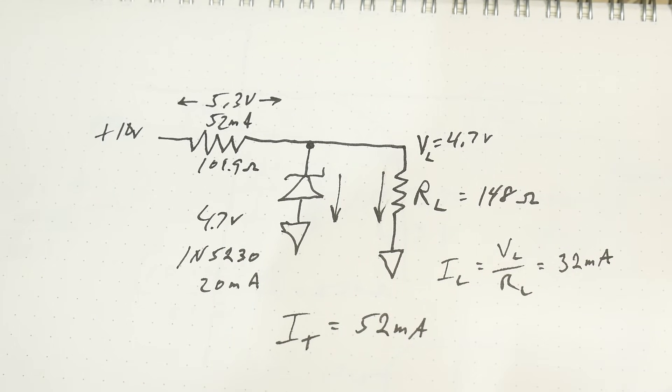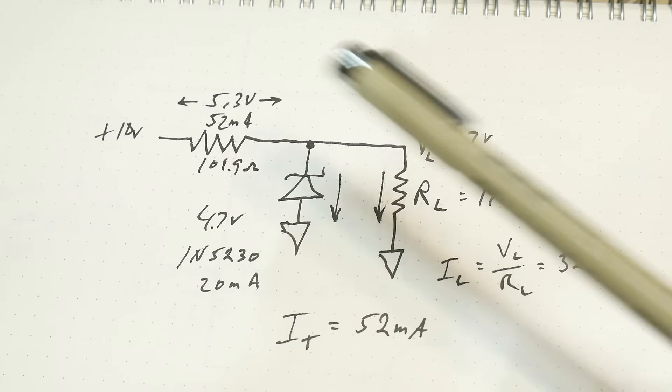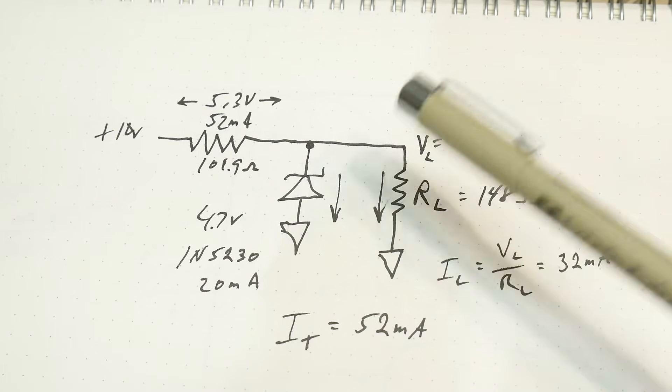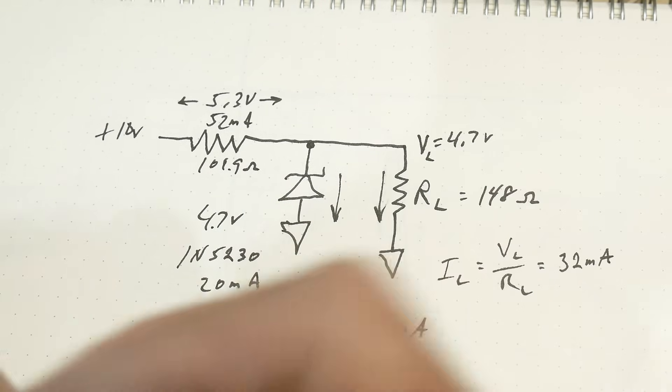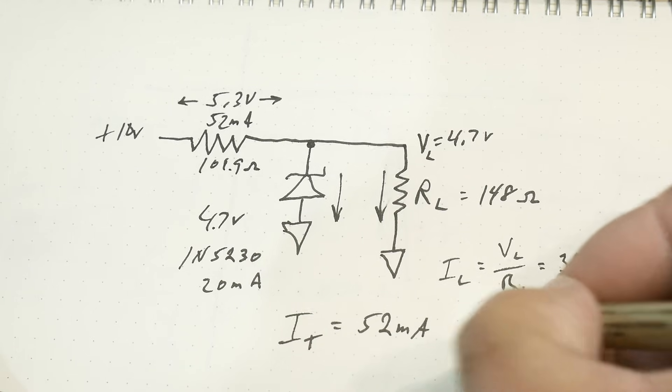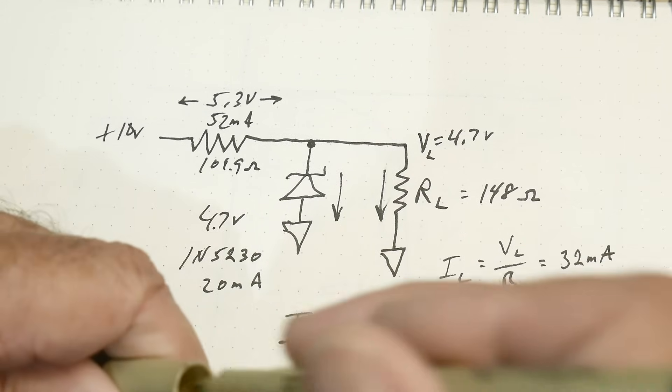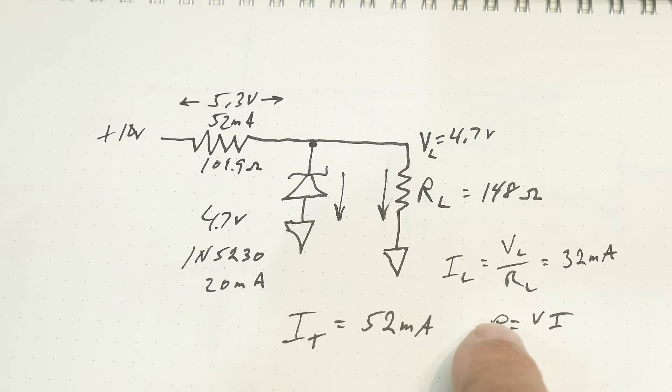Now, the next thing we need to worry about is how hot are these resistors going to get? How many watts are they going to dissipate? And we know that power equals voltage times current. So over here, how much do we have?